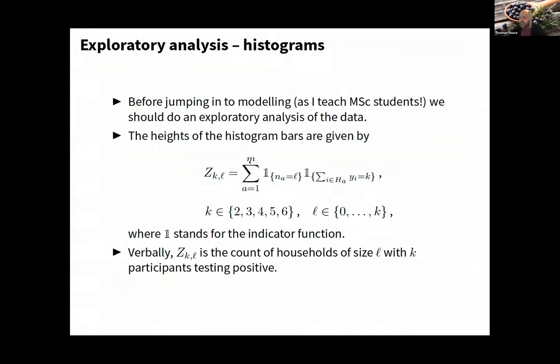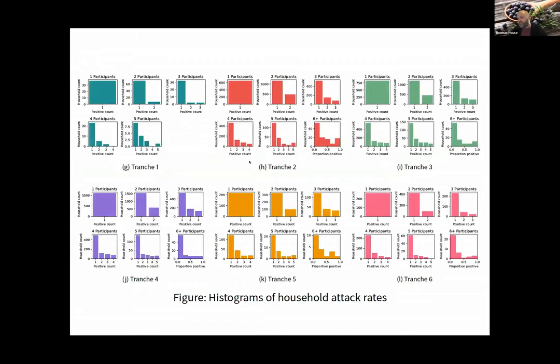Quick bit of exploratory analysis—these are histograms by count of people in the household. We've taken out households with no one positive because prevalence was small, so that's dominated by zero. These are very far from binomial—they're over-dispersed.